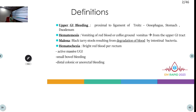Hematemesis is vomiting of blood or coffee-colored vomitus, and it usually comes from the upper GI tract. Melena is black tarry stools. The black color is because of the blood being degraded by intestinal bacteria.